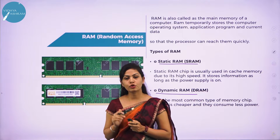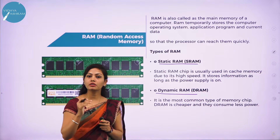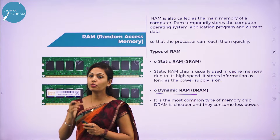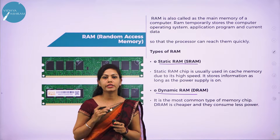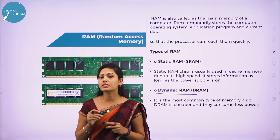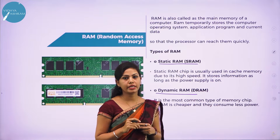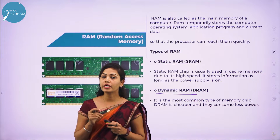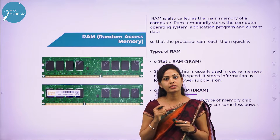SDRAM stands for synchronous dynamic random access memory. It is a special type of DRAM that is synchronized to the system clock. It knows when the next cycle is coming and has data ready when the CPU requests it, which increases efficiency by reducing CPU waiting time. DDR SDRAM stands for double data rate synchronous dynamic random access memory. It works the same way as ordinary SDRAM, but data transfer is double when compared to SDRAM.